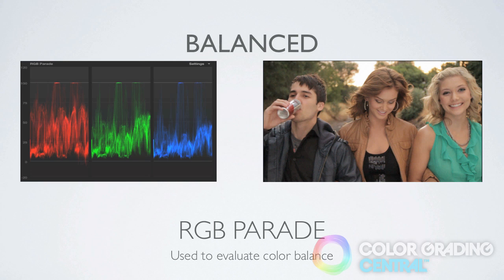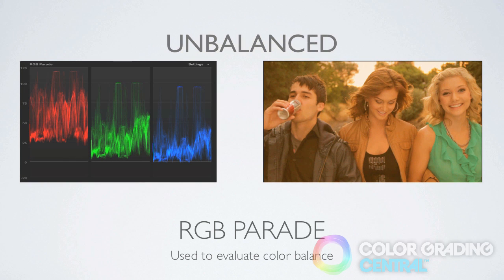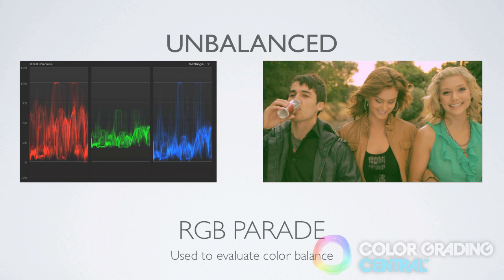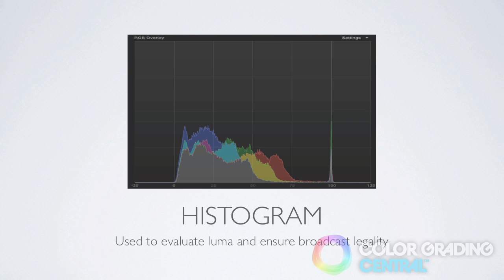But unless we're going for a stylized look, we want our blacks to be black in the shadows and our whites to be white in the highlights — when this is the case we have a color correct image. The first image is balanced correctly with the shadows black and the highlights white. This one shows the red channel elevated giving the image a strong red color cast. The next one shows the blue channel elevated giving the image a blue color cast. And lastly, this example shows the green channel elevated in the shadows making them green and suppressed in the highlights making them magenta.